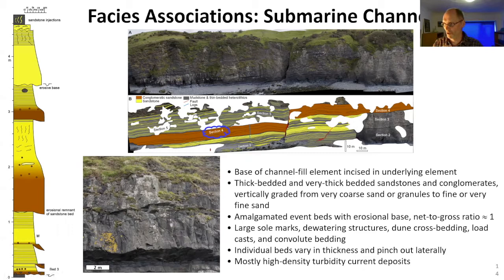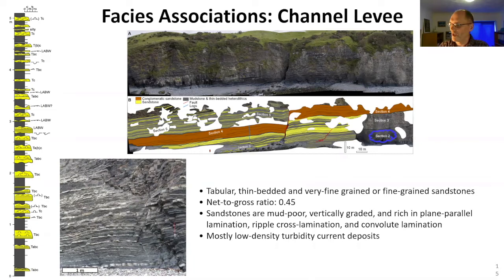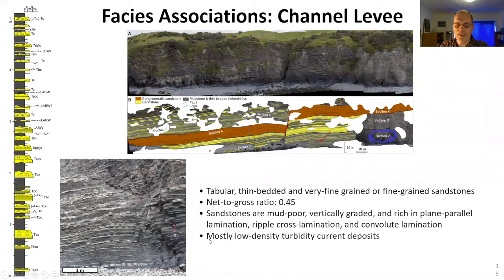The second facies association, interpreted as channel levee, had a large contrast with the first: beds were tabular, thin-bedded, and very fine- to fine-grained sandstone. Net-to-gross was the lowest in the entire section at 0.45. The sediments were poor in mud, vertically graded, and rich in planar parallel lamination, ripple cross-lamination, and convoluted lamination. Most of these beds were interpreted as low-density turbidity current deposits.